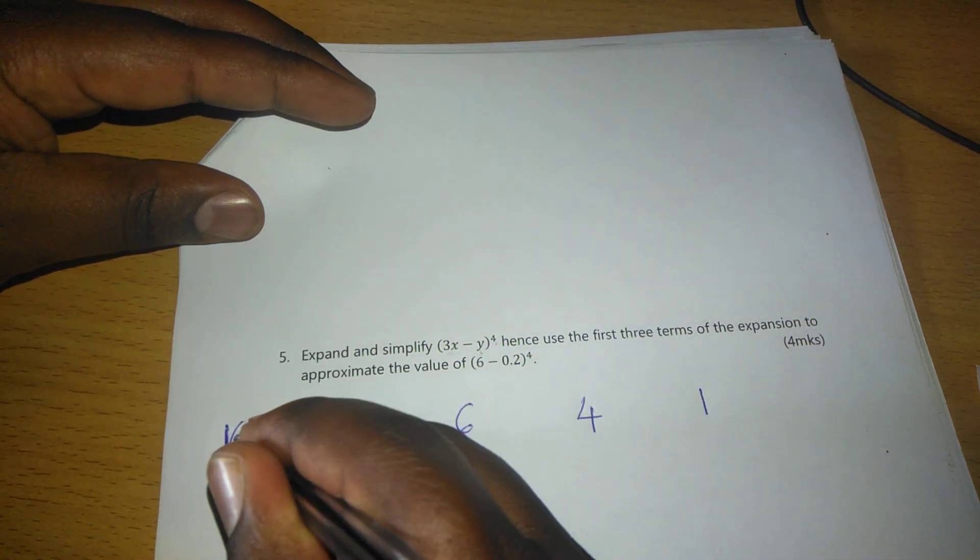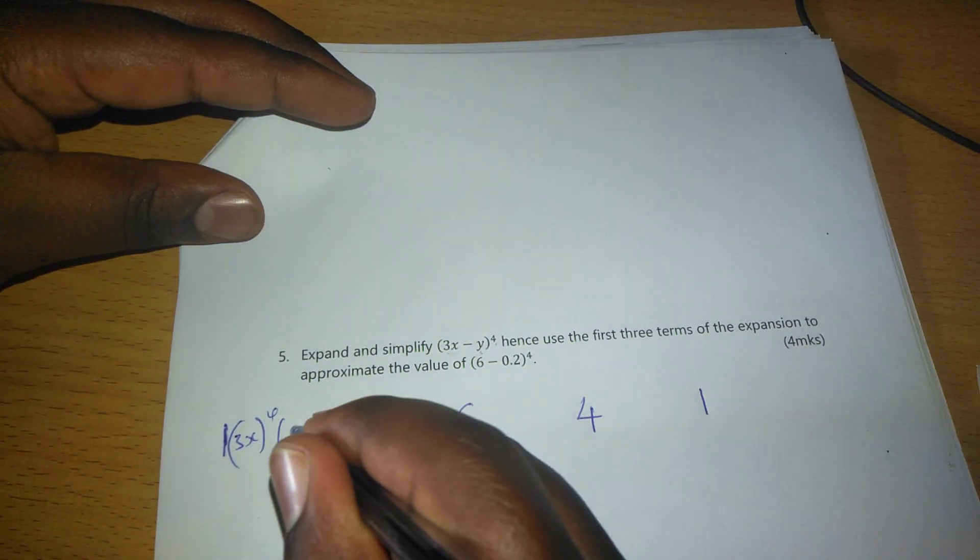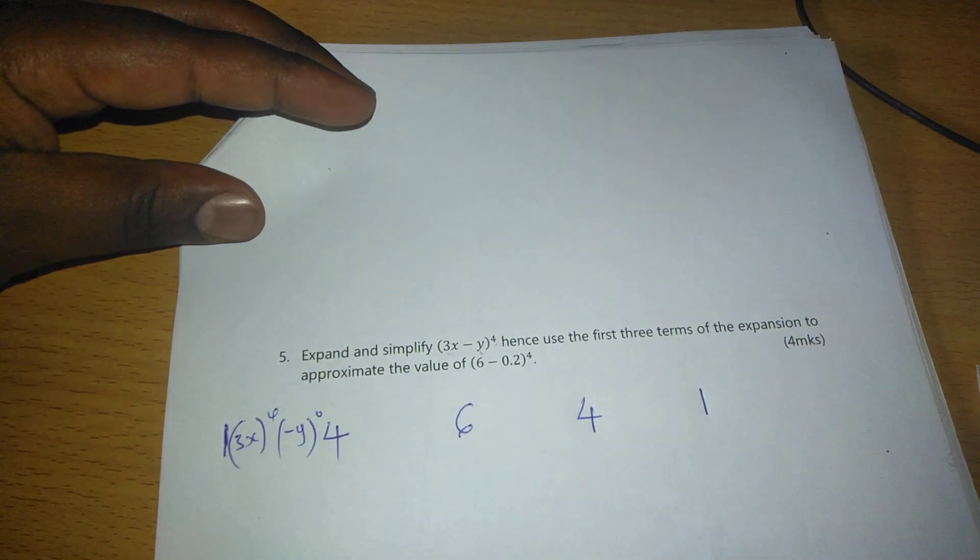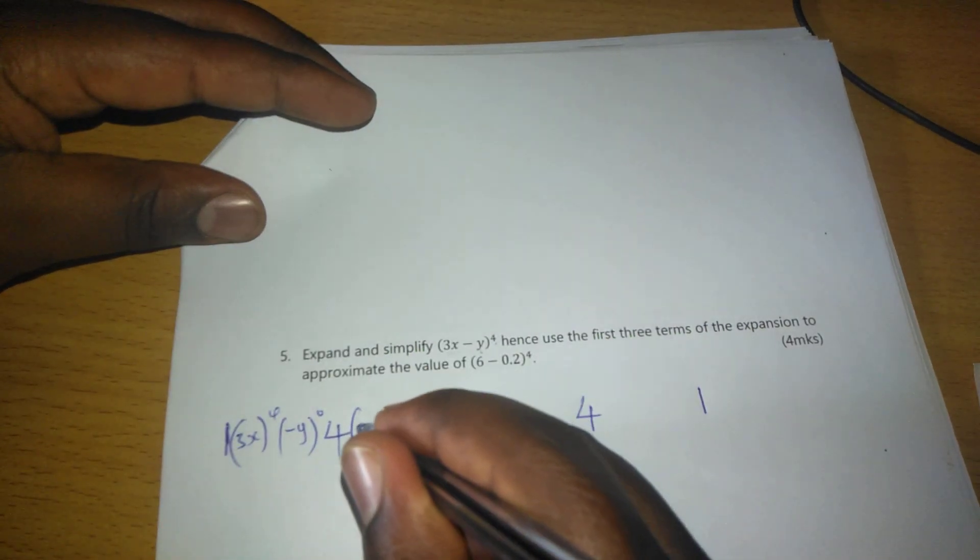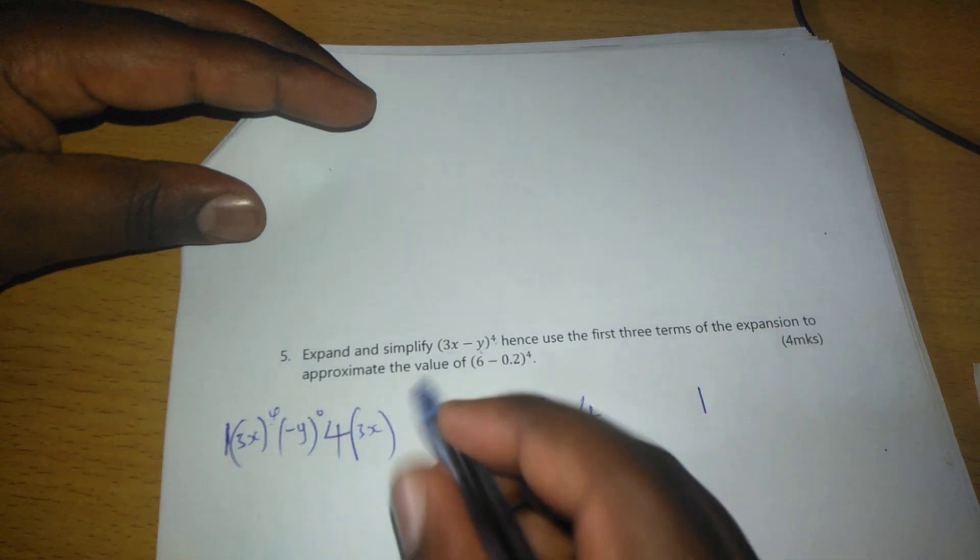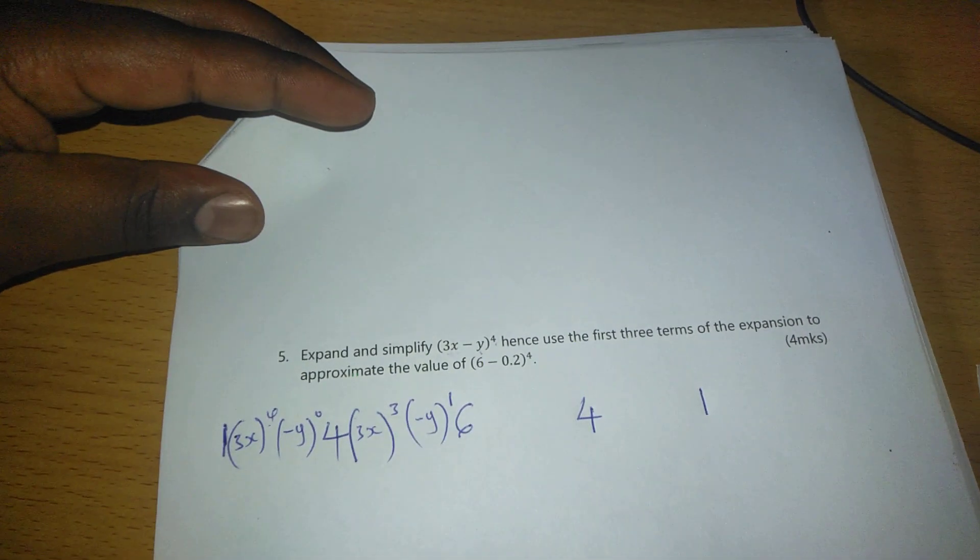So we will have (3x)^4 but (-y)^0. But in the next term, 3x is going to be raised to, we lower this one to 3, and -y is now raised to 1.